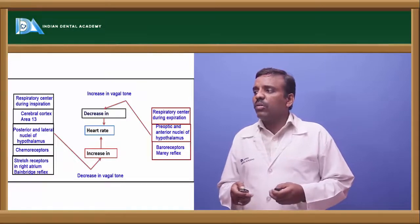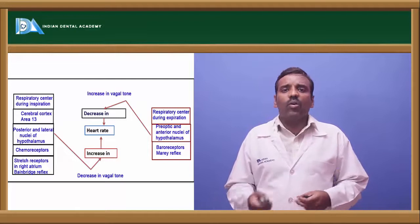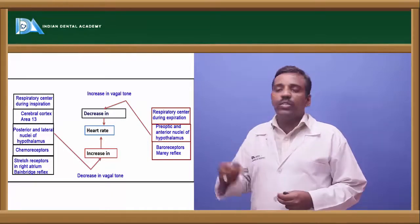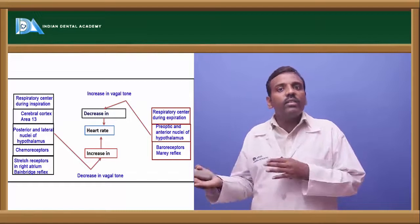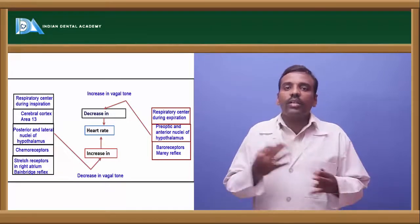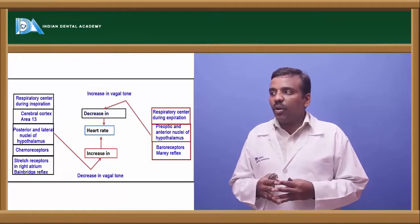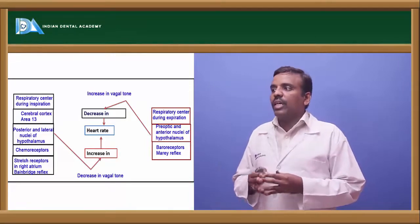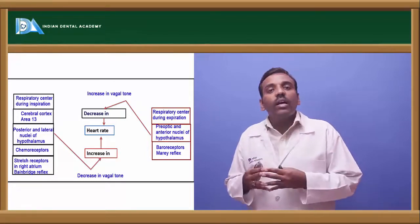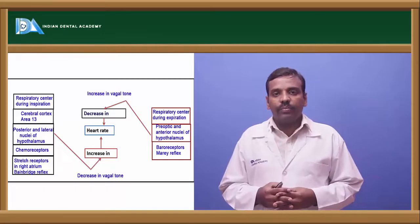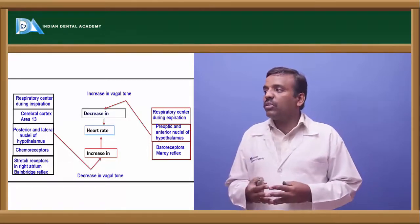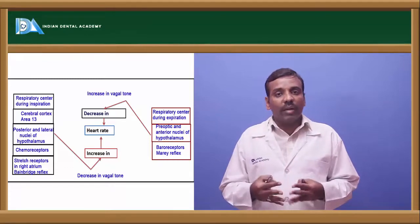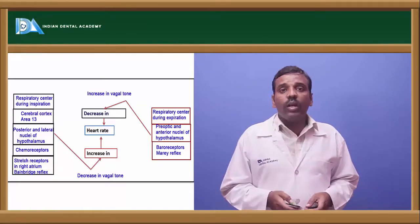Vagal tone increases or decreases to maintain normal heart rate. During expiration, respiratory centers, pre-optic and anterior nuclei, and baroreceptors (Marey's reflex) increase vagal tone, decreasing heart rate. During inspiration, those same centers decrease vagal tone, increasing heart rate.